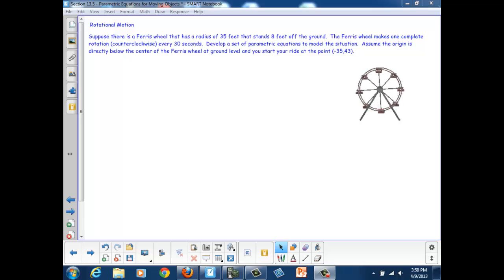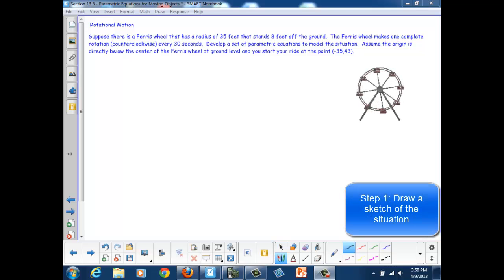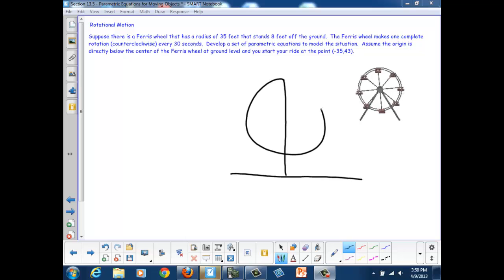Well, first of all, let's start by drawing a sketch of the situation. So I have this Ferris wheel, which has a radius of 35 feet, and it stands 8 feet off the ground, obviously not drawn to scale. We are rotating counterclockwise at a rate of 30 seconds per revolution.